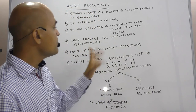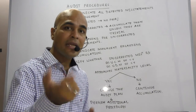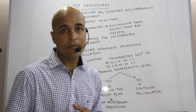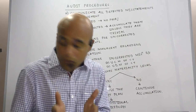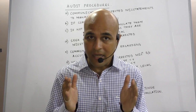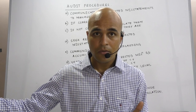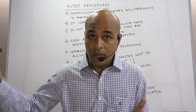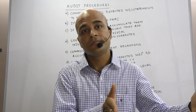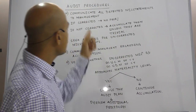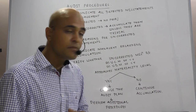Further, communicate to management regarding the accumulation of misstatements. Explain that in the current year there are some uncorrected misstatements, which means there is also a possibility of uncorrected misstatements from the previous year. Together, the aggregate amount may approach the materiality level. Therefore, once again request management to correct the misstatements.